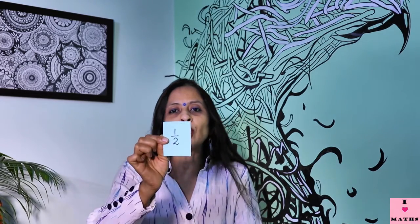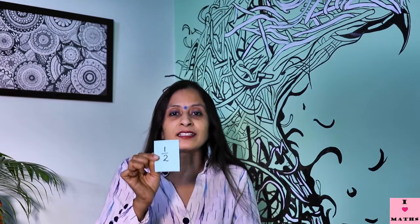Suppose I have picked up a card. On this card it is written 1 upon 2. I will color 1 upon 2 of my circle, means half of my circle. There are 12 parts in my circle, so I have to color half. Now you have to think how much is half of 12. Half of 12 is 6, so I will color 6 parts like this.